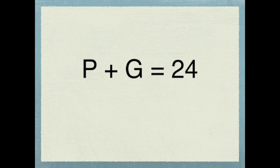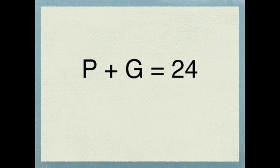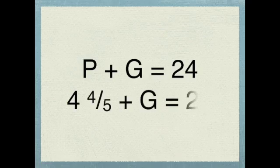I could write that equation like this: purple plus green is going to give me 24. And I kind of know using this equation how much purple is, so I could rewrite it like this: 4 and 4/5 plus the green will give me 24.